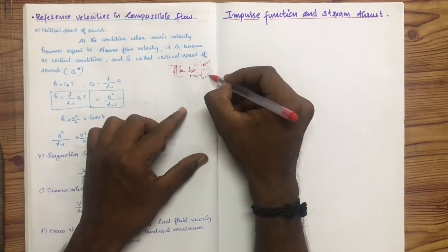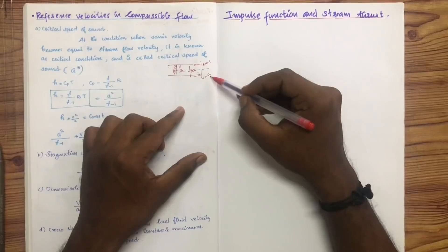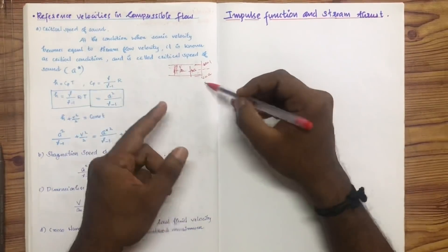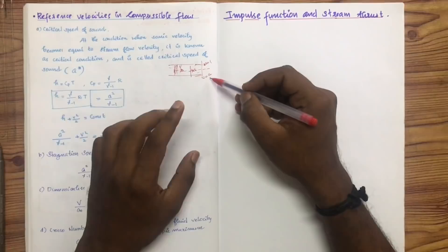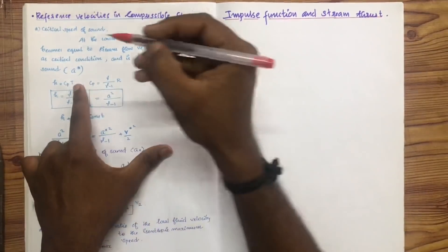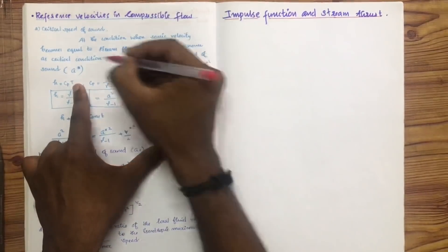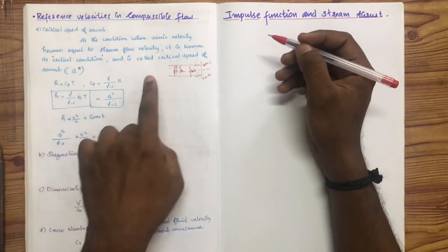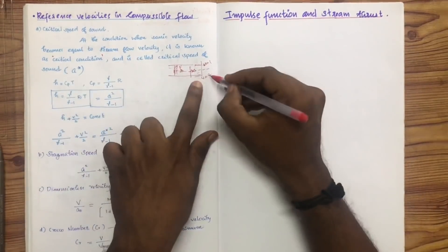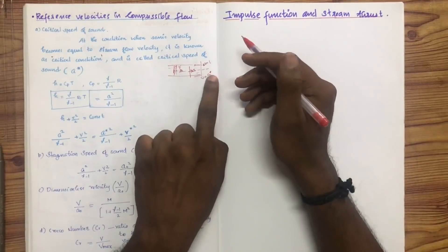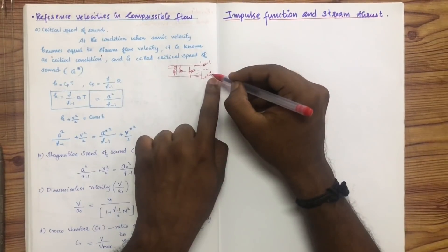When V becomes equal to A, the velocity of flow becomes equal to the velocity of sound. That region is known as the critical condition. The critical speed of sound is denoted by the notation A-star.